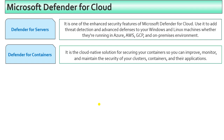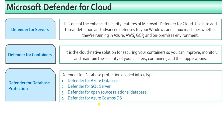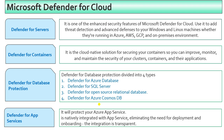Defender for Database Protection has four different types: Defender for Azure Database, Defender for SQL Server, Defender for Open Source Relational Databases, and Defender for Azure Cosmos DB. Defender for App Services protects your Azure App Services — it is natively integrated with App Service, eliminating the need for deployment and onboarding, as the integration is transparent.